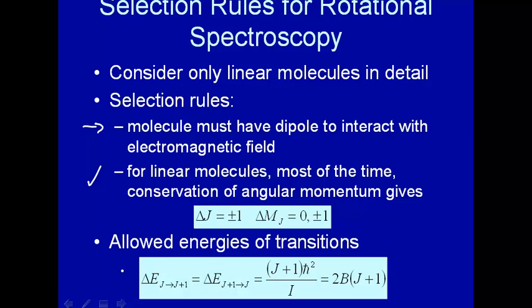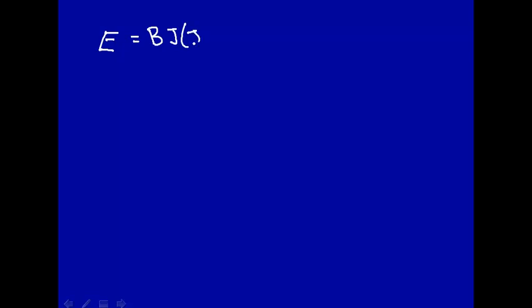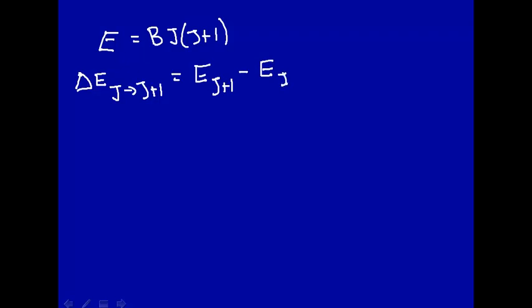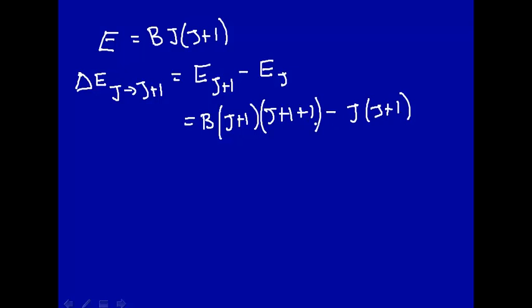With this selection rule, the allowed energies of the transitions — where you start from J and go to J+1, or from J+1 down to J — equal 2B times (J+1). Recall that the energy of the Jth level equals B·J·(J+1). So the change in energy going from the J state to the J+1 state equals the energy of the J+1 state minus the energy of the J state, which is B·(J+1)·(J+2) minus B·J·(J+1).